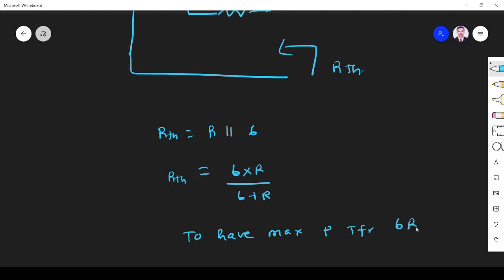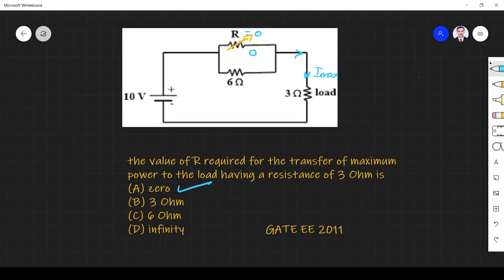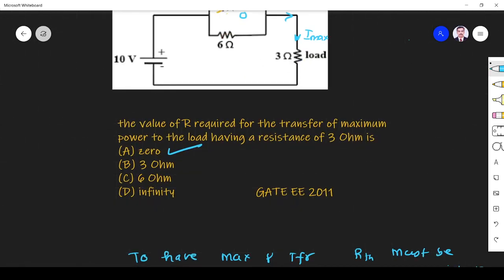So 6R divided by 6 plus R must equal zero. This implies R must equal zero. Both conditions work very clearly, so option A is the correct answer. Thank you.